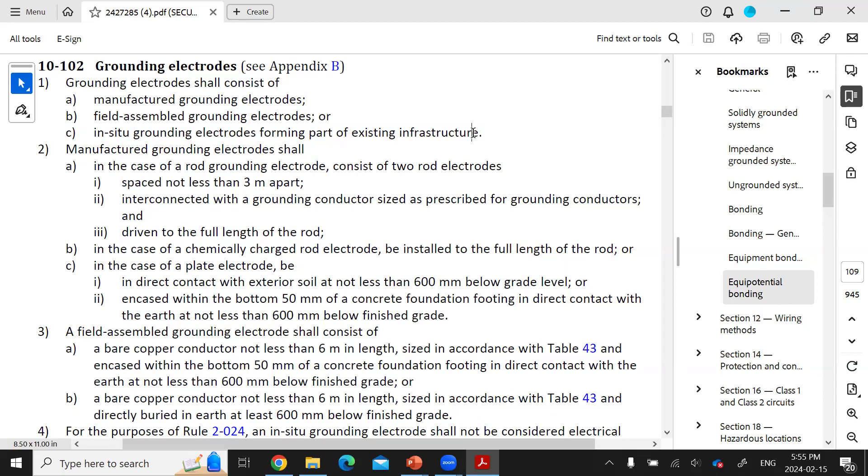This is interesting because all parts of the grounding and bonding system can be controlled by careful design and material selection, except when you get to the actual connection in the earth, where you can field assemble something or use something that's there.